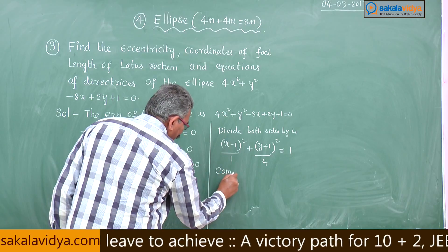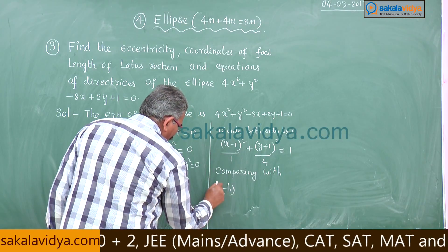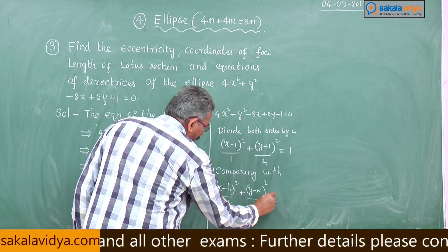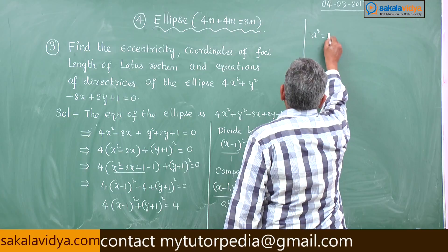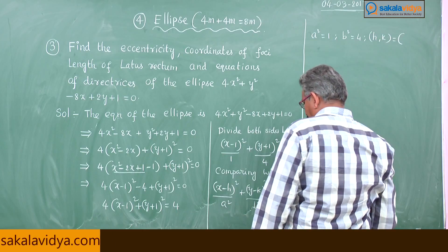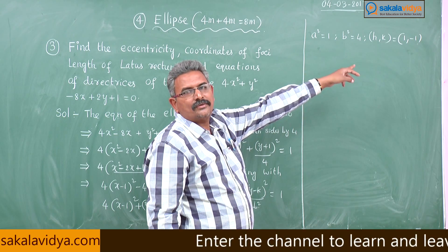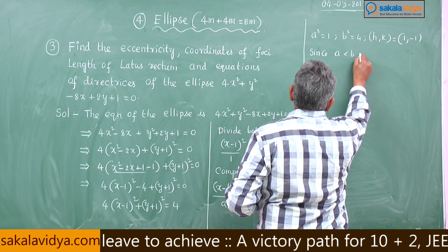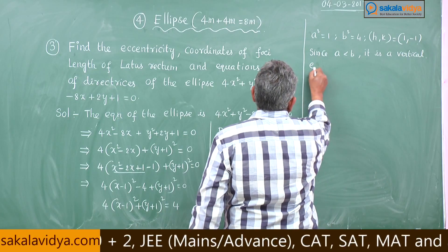We get (x - 1)² / 1 + (y + 1)² / 4 = 1. Comparing with (x - h)² / a² + (y - k)² / b² = 1, we get a² = 1, b² = 4, and (h, k) = (1, -1). Since a² < b², it is a vertical ellipse.